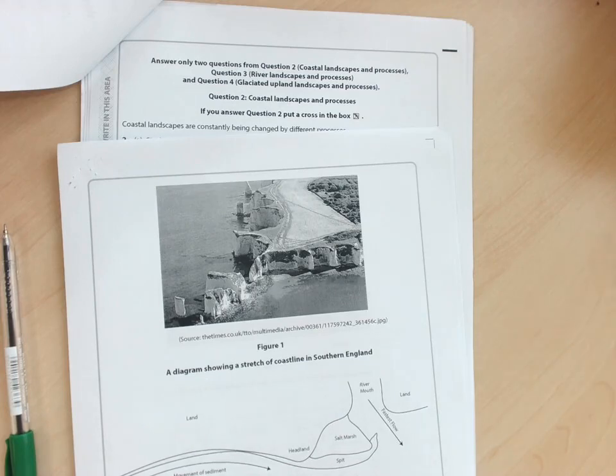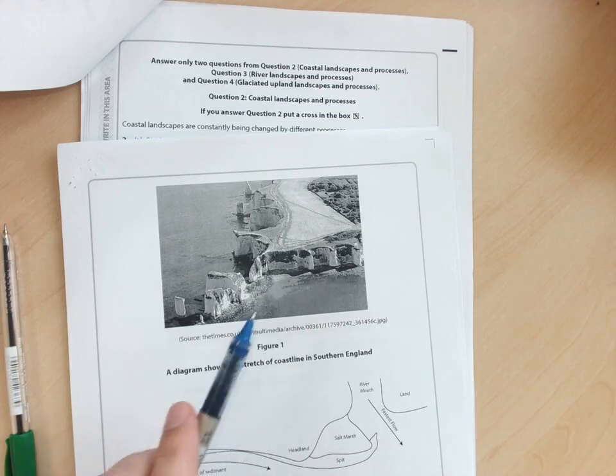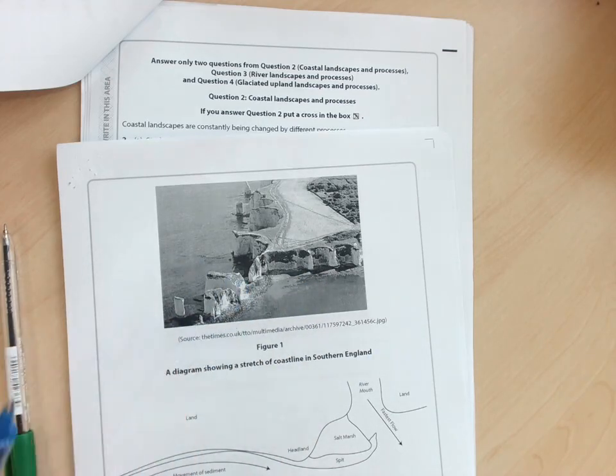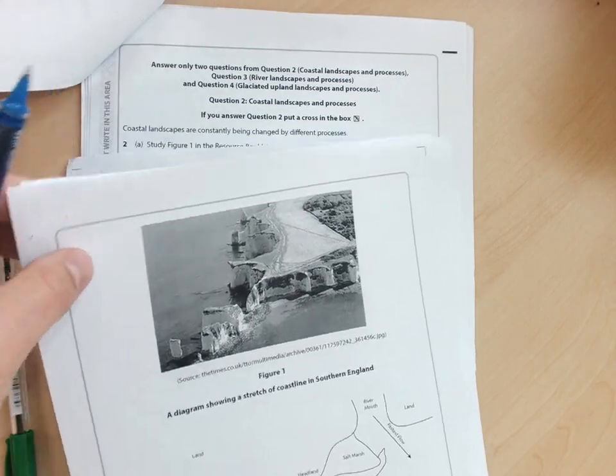Rather distinctive headland. We can name any of these really as a cliff. We've got the stack, we've got the stump, the wave cut platform. Any of those will do to answer that question.